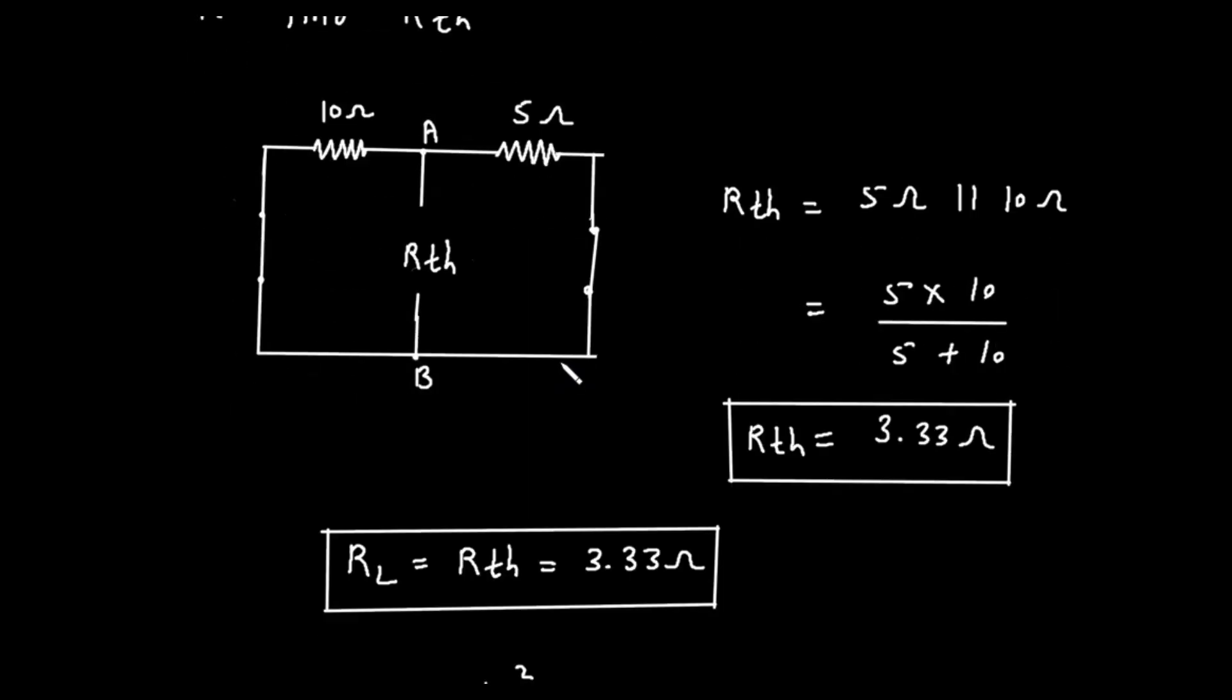Now, we can calculate the equivalent resistance of these two parallel resistors. This equivalent resistance will be our Thevenin resistance, RTH. The formula for two resistors in parallel is their product divided by their sum. So, RTH is equal to 5 ohms in parallel with 10 ohms. Mathematically, this is written as RTH equals the fraction with 5 times 10 in the numerator, and 5 plus 10 in the denominator. The numerator, 5 times 10, is 50. The denominator, 5 plus 10, is 15. So, RTH is equal to 50 divided by 15. This calculation gives us a Thevenin resistance of approximately 3.33 ohms.